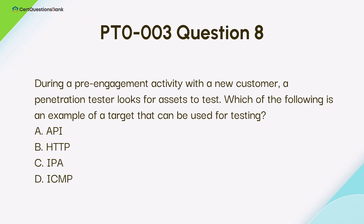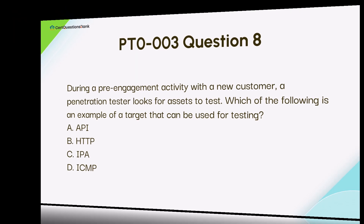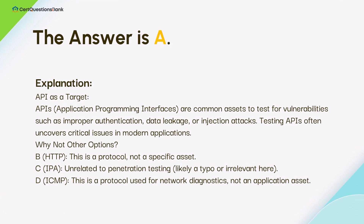During a pre-engagement activity with a new customer, a penetration tester looks for assets to test. Which of the following is an example of a target that can be used for testing? A. API. B. HTTP. C. IPA. D. ICMP. The answer is A, API (Application Programming Interface).